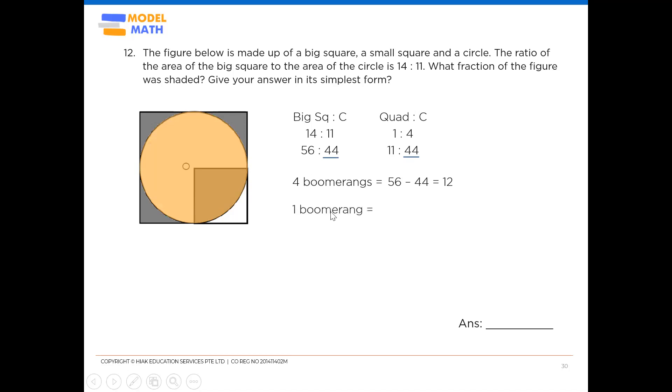Hence, we can work out the value of 1 boomerang now. So each boomerang is worth 3 units. So I'm just going to record it back into my shaded boomerangs. This is 3 units, 3, 3. Shaded part, we are getting closer to our goal.